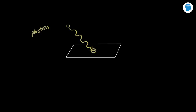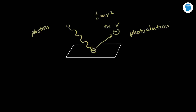Here we're showing the electron being knocked loose. The electron is moving in this direction with some velocity v. If the electron has mass m, we know there's a kinetic energy: the kinetic energy of the electron equals one-half mv squared. This freed electron is usually referred to as a photoelectron. One photon creates one photoelectron — one particle hits another particle.